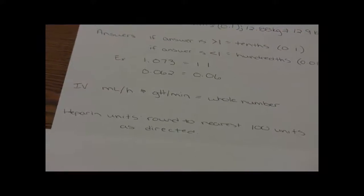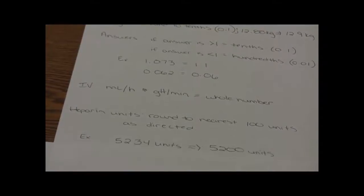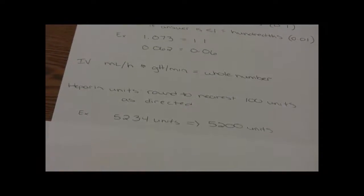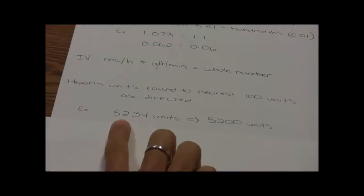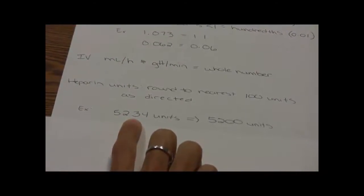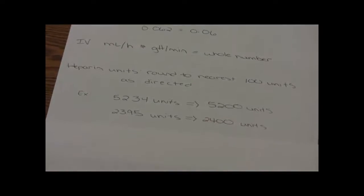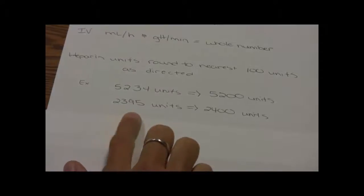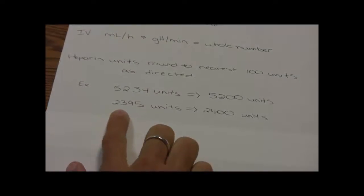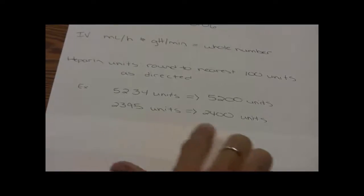Heparin units — sometimes we'll be directed to round to the nearest hundred units. So if we get 5,234 units of heparin, the hundreds place would be where the 2 is. I look to the number to the right — it's a 3 — so I keep it at 5,200 units. Similarly, 2,395 units: the 3 is in the hundreds place, I look directly to the right, it's a 9, and I round that up to 2,400 units.